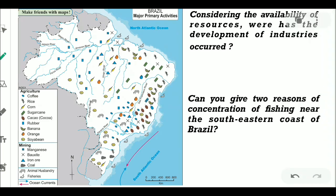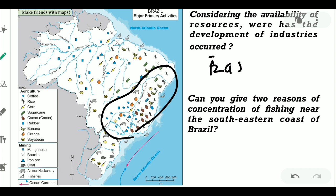Next question: considering the availability of resources, where has the development of industries occurred? We can clearly see that the development of industries occurred in the eastern coast of Brazil — that is the eastern part of Brazil.